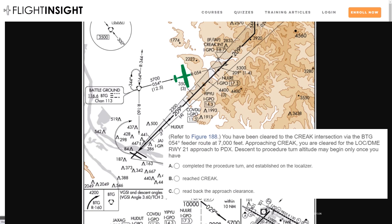The minimum altitude for this segment is 5,700 feet, but this only applies when we're actually cleared for the approach — until then, our last assigned altitude of 7,000 still applies. Most people answer B, that descent can only begin once reaching Creek, which might be true if we were on a radar vector. A is also too late — once we begin the procedure turn, we should already be descending to the procedure turn altitude of 5,700 feet. The correct answer is C: reading back the approach clearance authorizes us to fly all published altitudes on the plate, so we're good to descend right away.